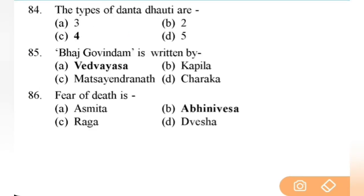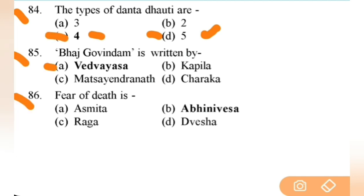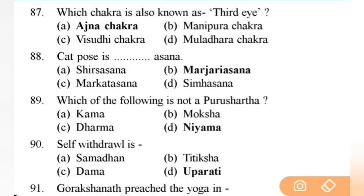The types of Dhauti according to Maharishi Gherand are — right answer is D — 5. This is a very confusing question for students. When you read the Gherand Samhita on page 40, you see four types of Dhauti: Dantamula (teeth), Jihva (tongue), Karnarandhra (ears), Kapal Randhra (frontal sinuses). But in the inner pages, Maharishi Gherand presents Karnarandhra technique as two separate practices, making the right answer five. Next: fear of death is Abhinivesha — important.